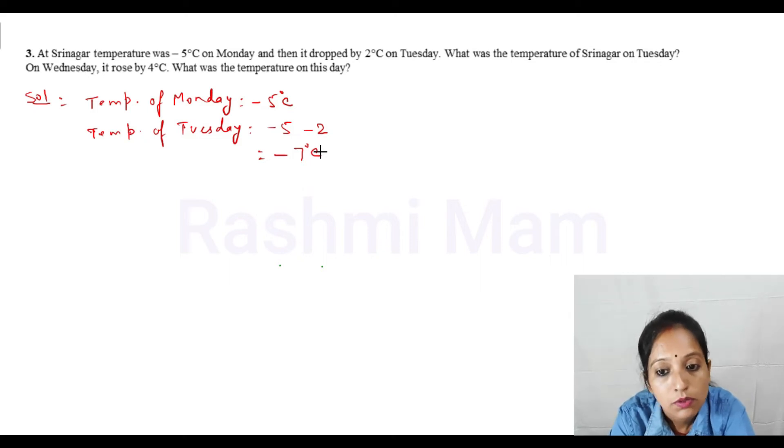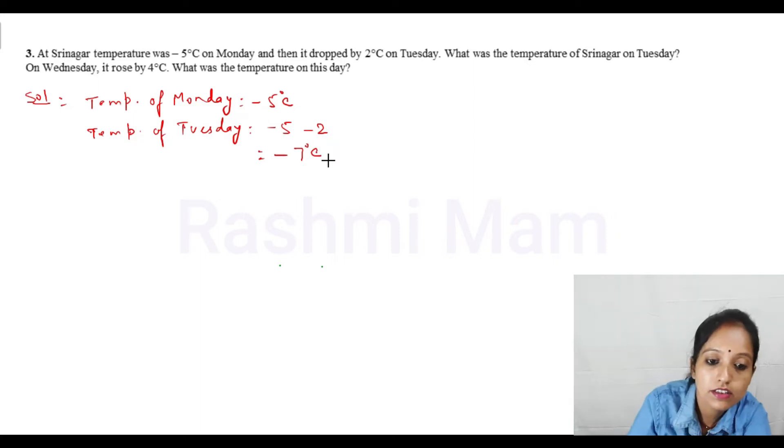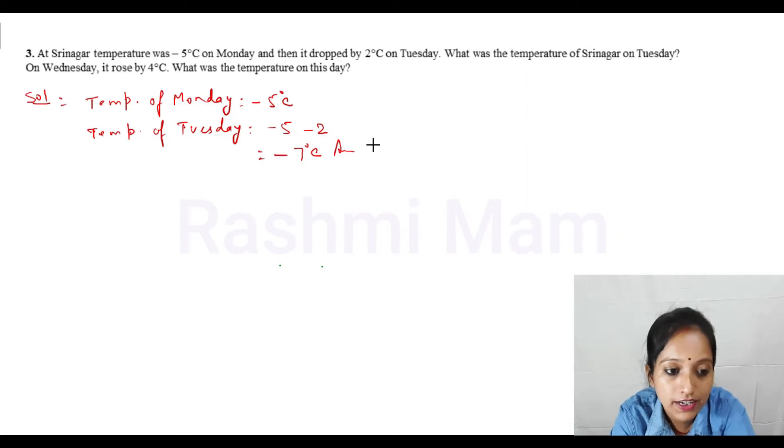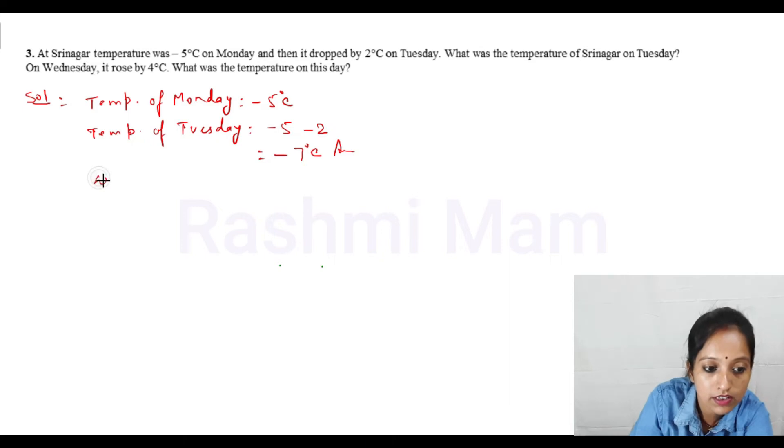What was the temperature of Srinagar on Tuesday? The first part answer: Tuesday's temperature is minus 7 degrees C. Now the second part is asking: on Wednesday it rose by 4 degrees. What is the temperature on Wednesday?